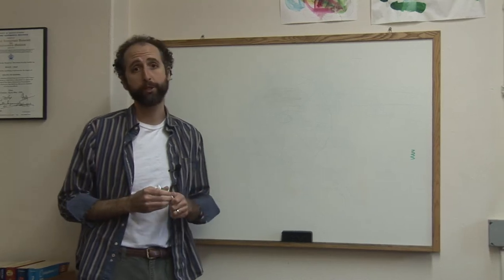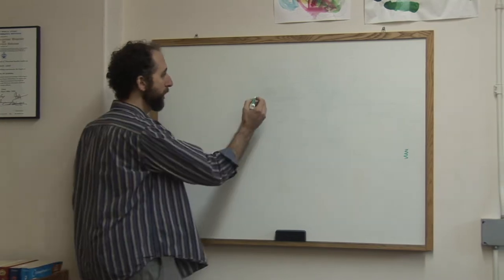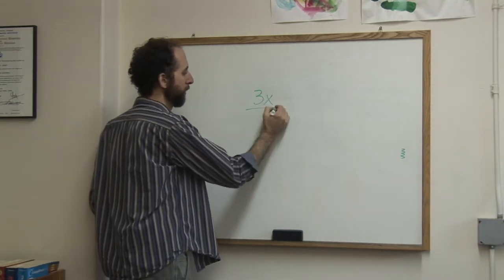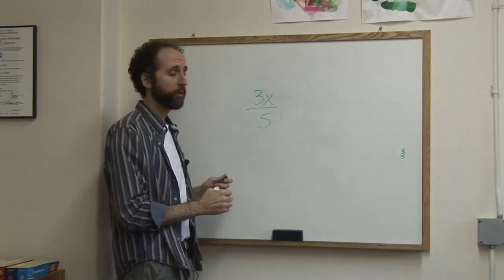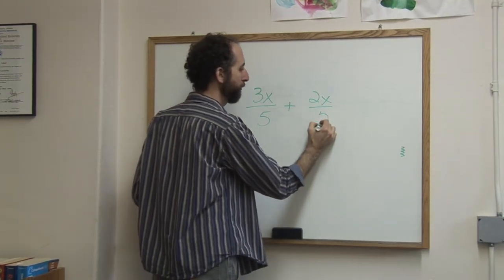Adding fractions with variables is really no harder than just adding fractions. Let's say you've got 3x over 5 and you want to add it to 2x over 5.